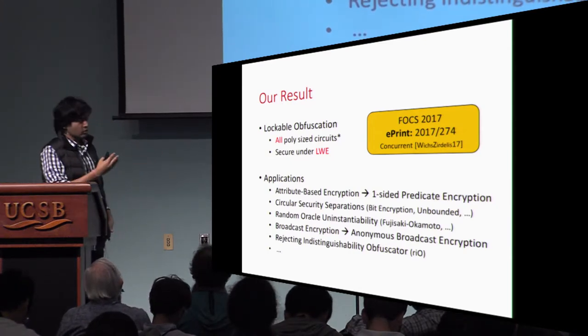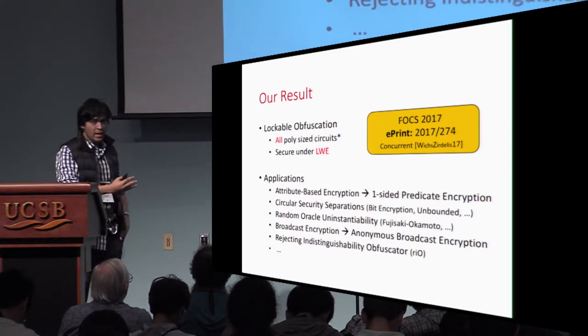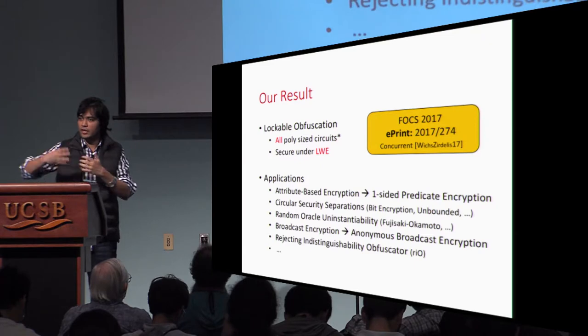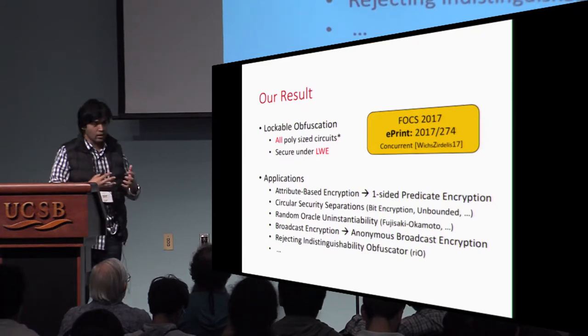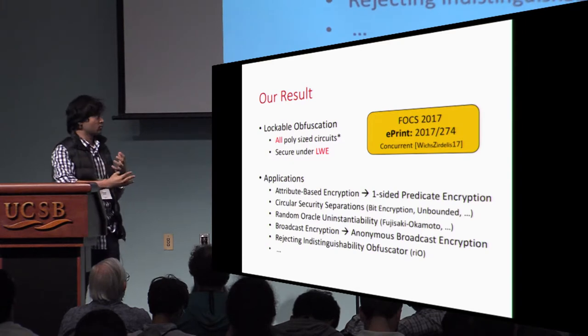The applications are converting an attribute-based encryption scheme to a one-sided predicate encryption scheme, getting some uninstantiable results in the circular separations, as well as some random oracle uninstantiable results, and getting anonymous broadcast encryption from broadcast encryption.